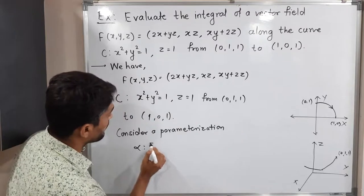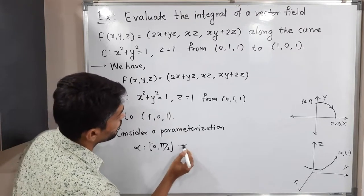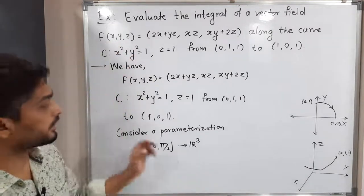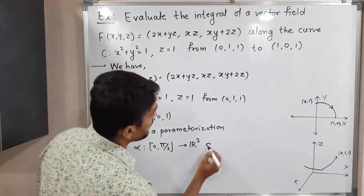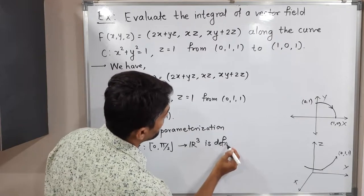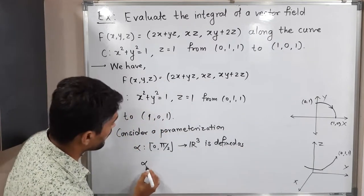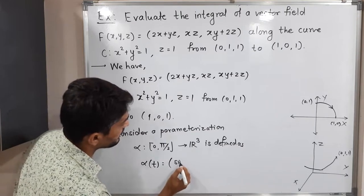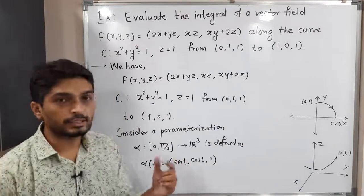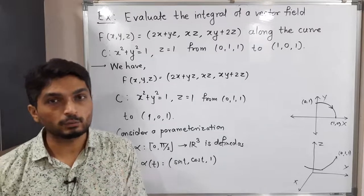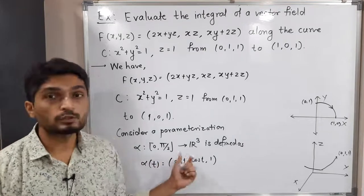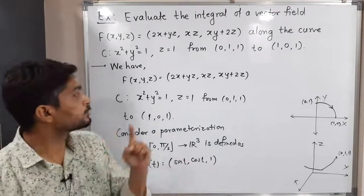Let α be defined on the closed interval [0, π/2] to ℝ³. α(t) is defined as (sin t, cos t, 1). You know that in the xy-plane we have a part of a circle, and the parameterization will be (sin t, cos t) since sin²t + cos²t = 1, which satisfies the circle condition.